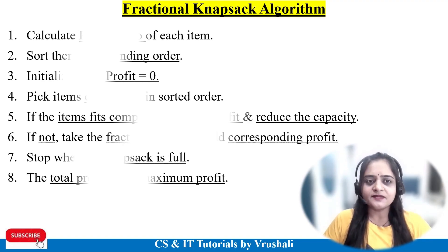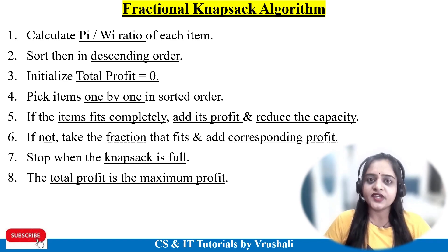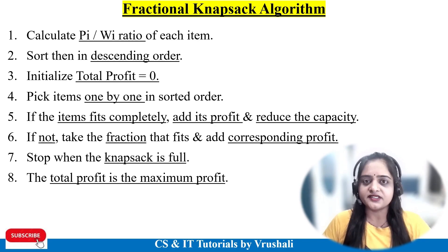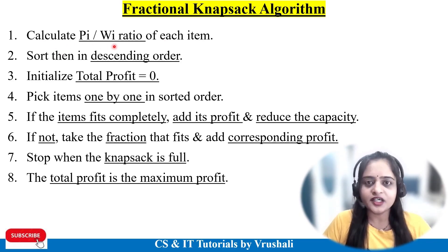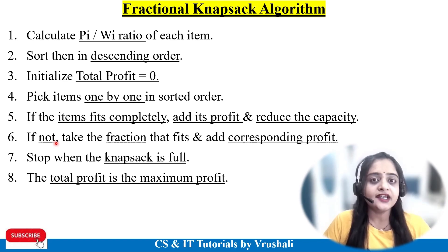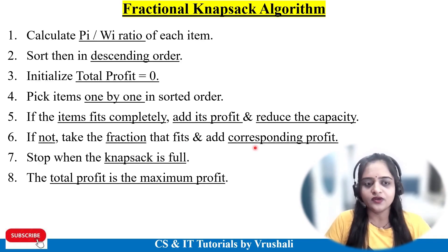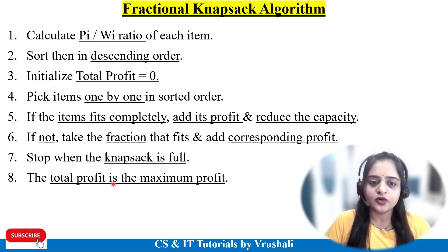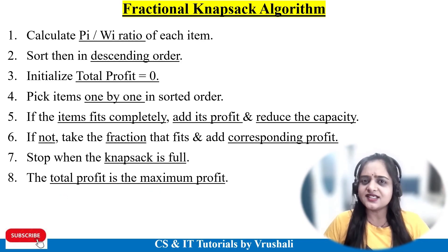As per the fractional knapsack algorithm, the same steps we followed while solving the example apply. First, calculate the profit-weight ratio. Then sort in descending order. Initially, total profit equals 0. Pick items one by one in sorted order. If an item fits completely, add its profit and reduce the capacity. If it doesn't fit completely, take it in fraction partially and add the corresponding profit. Repeat until the knapsack is full, then calculate total profit as the maximum profit.